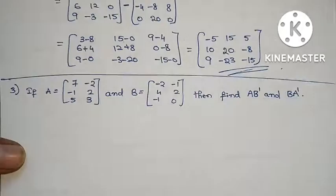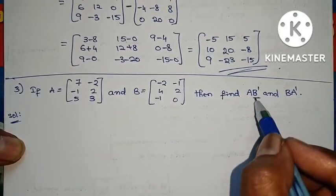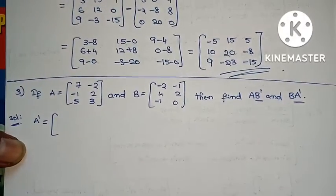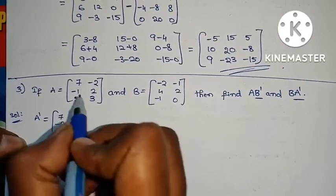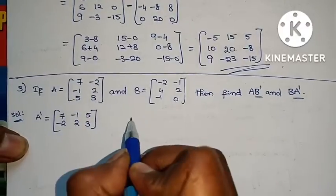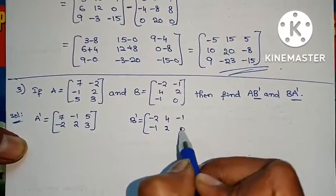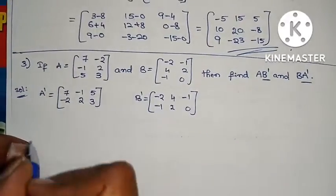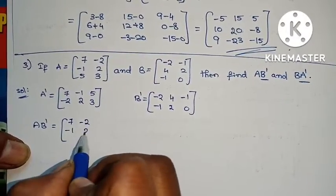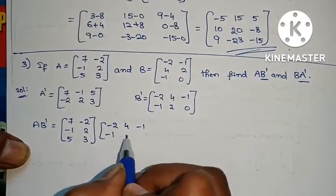Next problem: If A equals to this matrix and B equals to this matrix, then find AB transpose and BA transpose. We need B transpose and also A transpose. A transpose: rows become columns — first row, first column; second row, second column; third row, third column gives [7, -2; -1, 2; 5, 3]. And B transpose is [-2, 4; -1, 2; 0, ...].